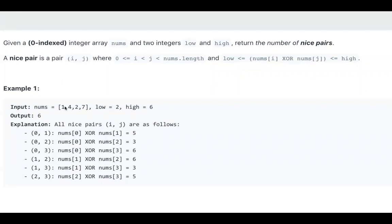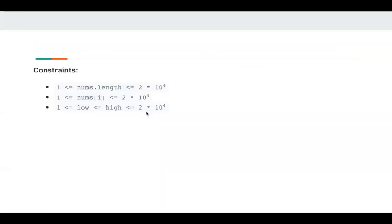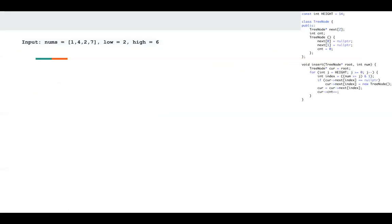For example, here there are six such nice pairs. Their XOR is within two and six. Let's take a look at the constraints. The nums length and each nums[i] is within one and two multiply 10 to the fourth.